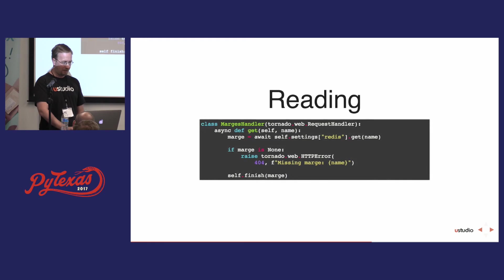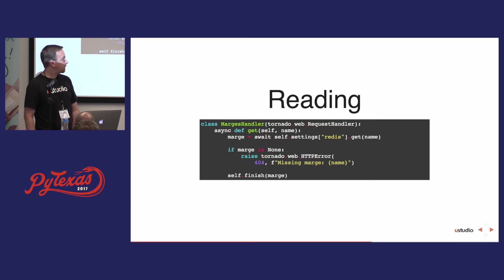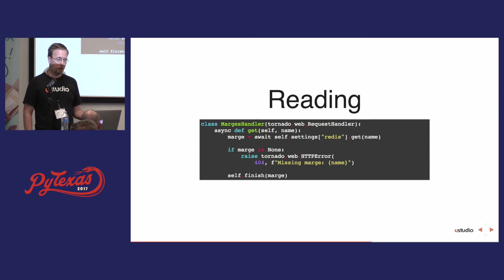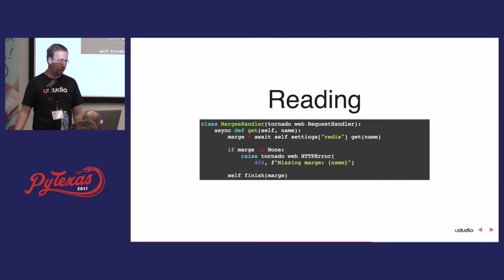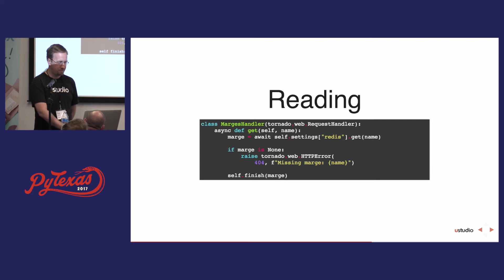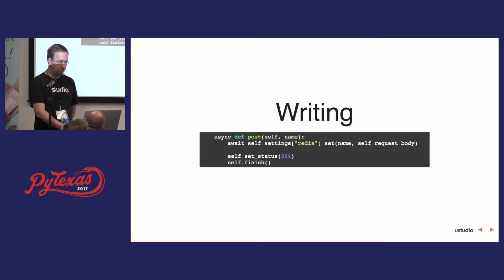Now we have our connection and can implement our handler. We have an async get method. We get the Redis connection out of our application settings, call get, and await the result. Again, if there's no result we return a 404, otherwise return the value. This should look pretty similar to code using something like redis-py, just with async and await added in the right places.